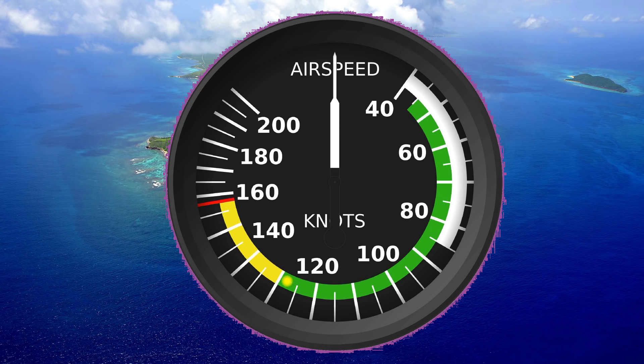Now as we move along the curve here, and we get to the top of the green arc, that's VNO, normal operating speed. So we say don't go into the yellow arc unless it's really smooth air. Somewhere along here though, before VNO, we actually have VA, which is maneuvering speed.